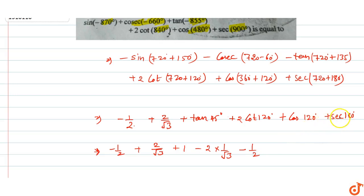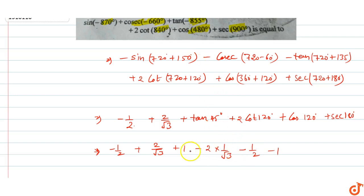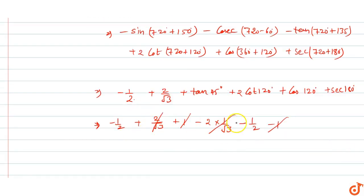Combining all terms: -1/2 + 2/√3 + 1 - 2/√3 - 1/2 - 1. The 2/√3 terms cancel out, and simplifying gives -1/2 + 1 - 1/2 - 1 = -1. So the value of this trigonometric expression equals minus 1.